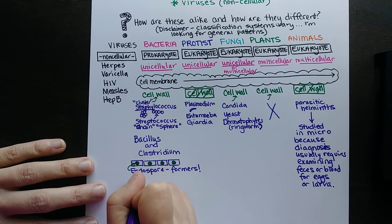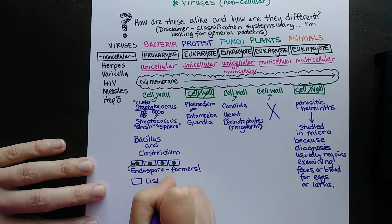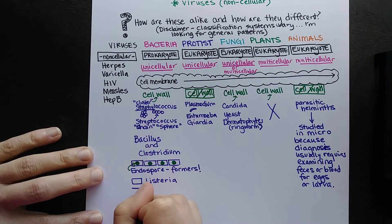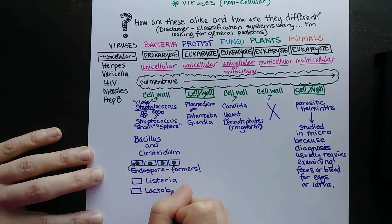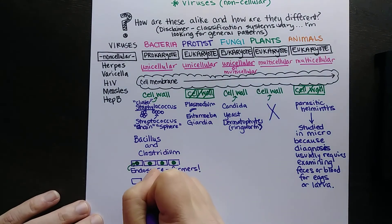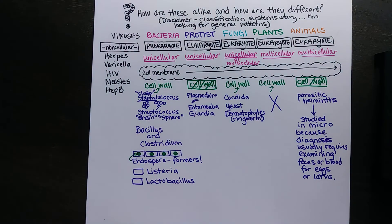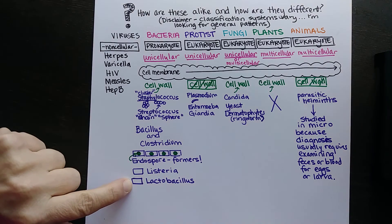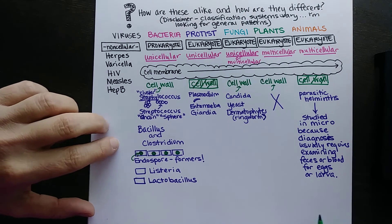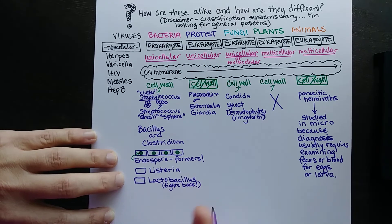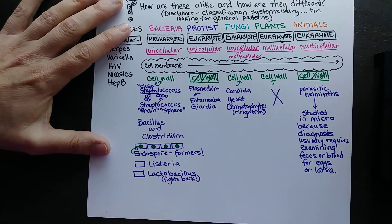Another example is Listeria, which is gram positive, relating to its cell wall structure — we'll get into that later. My personal favorite bacteria is Lactobacillus. I eat about two cups of yogurt a day and I'm passionate about local dairy sources. Lactobacillus is considered a probiotic or good flora that helps us stay healthy. Actually, Lactobacillus fights disease — by its presence, it inhibits other disease-causing organisms.